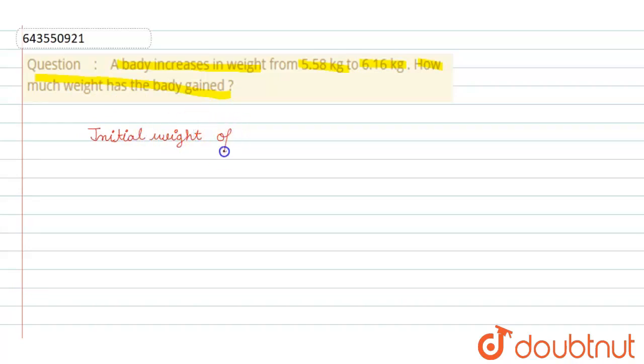Initial weight of body is 5.58 kg, and final weight of body is 6.16 kg. So weight gain...